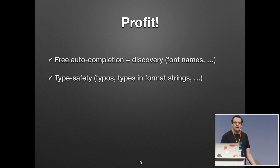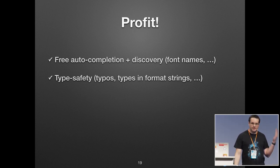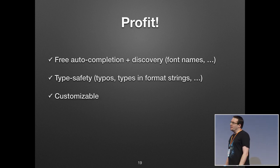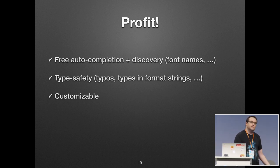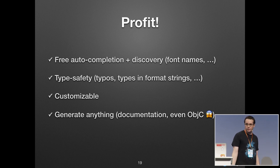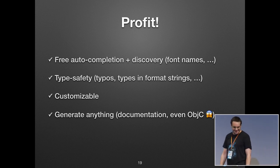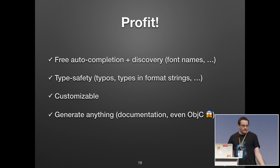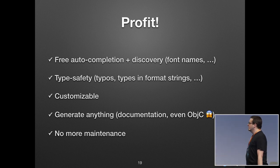We have type safety — even for the constants, but even for the types in our format strings — so we won't crash with bad access as before. And it's highly customizable. Because it's customizable, the tool is called SwiftGen, but you can actually generate whatever you want. I've seen people use SwiftGen to generate documentation and even Objective-C — yeah, that's still a thing. You can have everything you wish there, and you don't have to maintain it once you put it in your project.